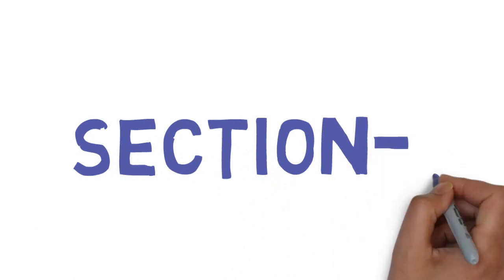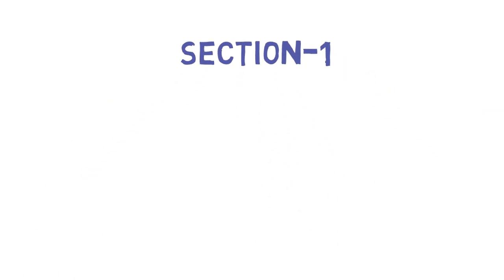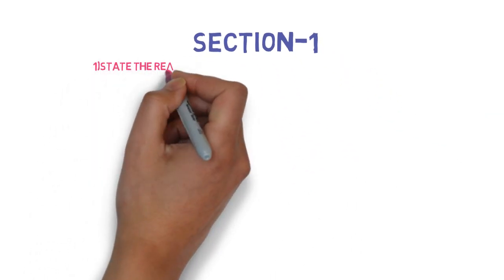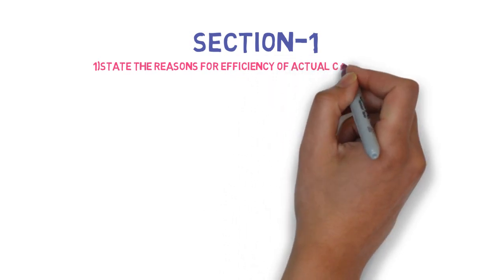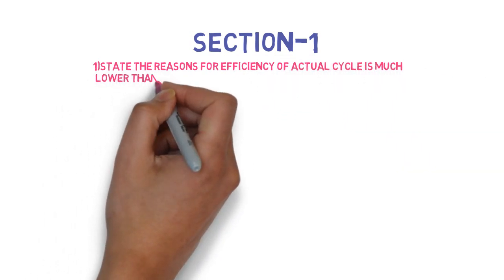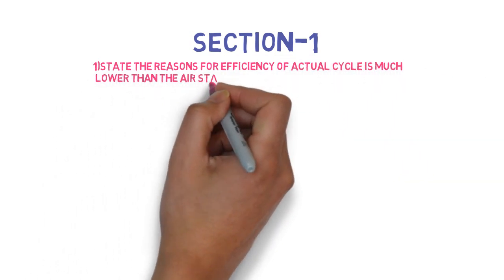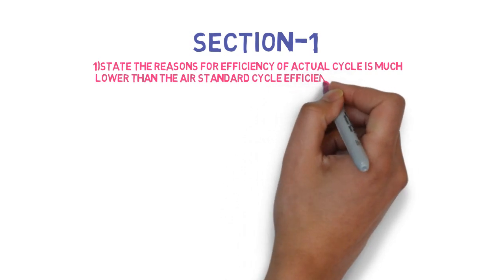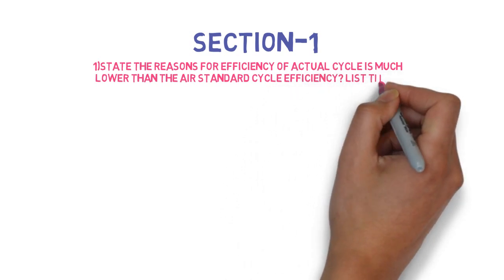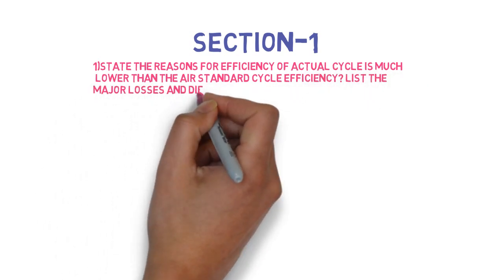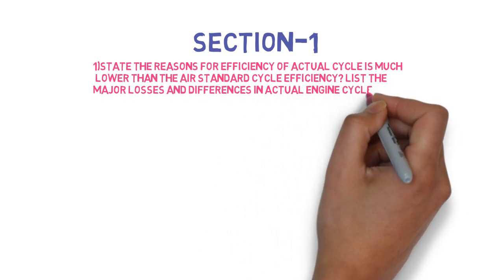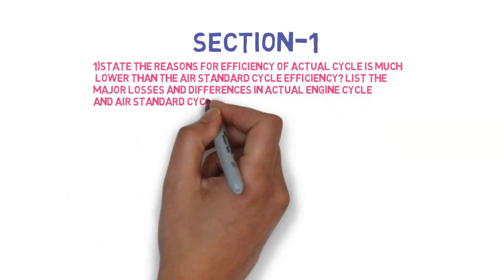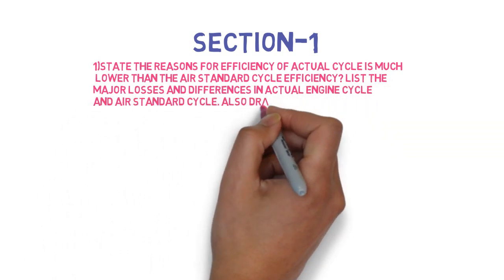We'll be covering 5 questions each section. Let's get started with Section 1 wherein the first question is: State the reasons why efficiency of the actual cycle is much lower than the air standard cycle efficiency. List the major losses and differences in actual engine cycle and air standard cycle. Also draw the actual cycle. This can come for 10 marks.